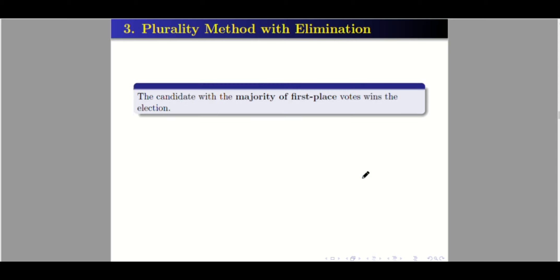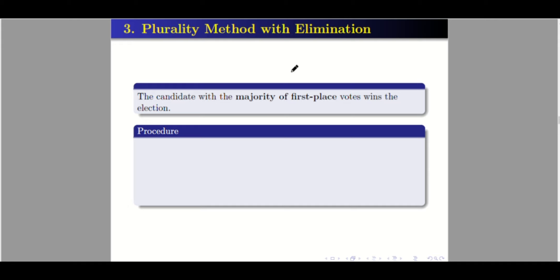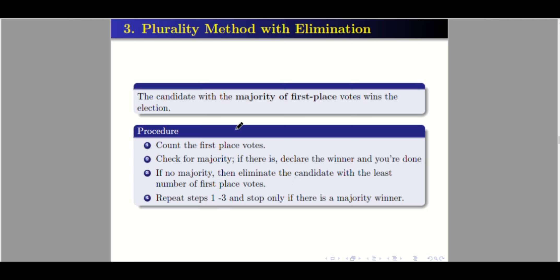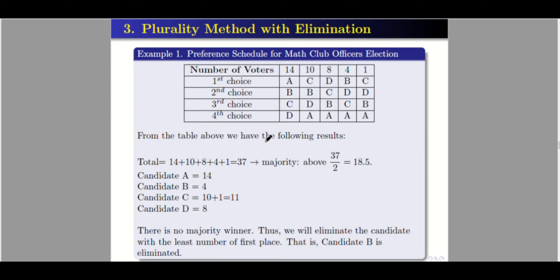Now let's go to the third method: the plurality method with elimination. The candidate with the majority of first-place votes wins. Unlike the regular plurality method, majority is a requirement here. The procedure is: first, count the first-place votes. Then check for majority — if one candidate already has the majority, declare them the winner. If there is no majority, eliminate the candidate with the least number of first-place votes, and repeat the steps.